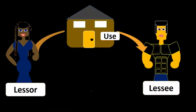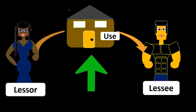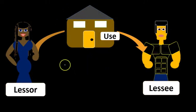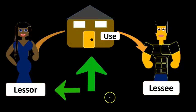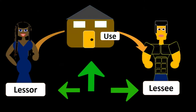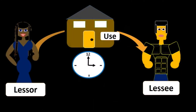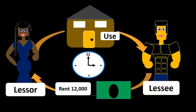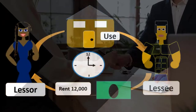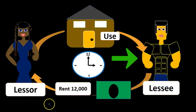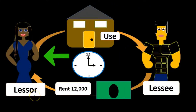For example, we could have a transaction such as this where this is the piece of property. We have the leasor, the owner of the property, allowing the usage of that property to the leasee. As time passes, the leasee will then owe the leasor rent for the usage of that property. At the end of the leased period, the property would then be returned from the leasee to the leasor.